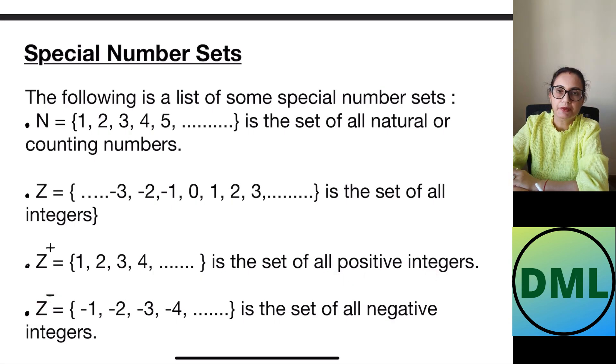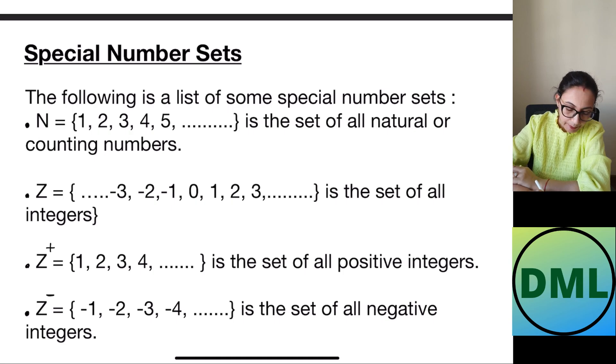If I take Z negative that means I am taking negative numbers. Minus 1, minus 2, minus 3, minus 4 and so on is the set of negative integers.